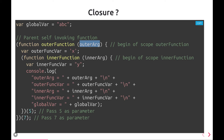A closure is just a way of persisting some variable inside a function, where those variables are coming from outside that function's scope — either the global scope or the parent function scope.